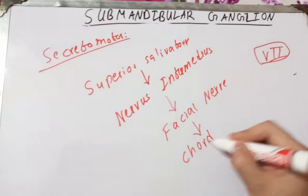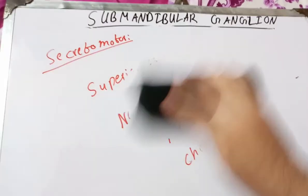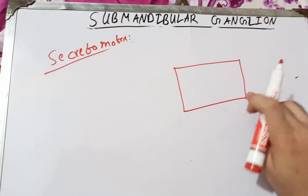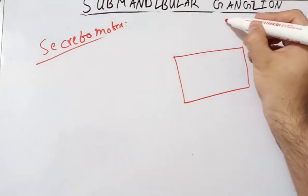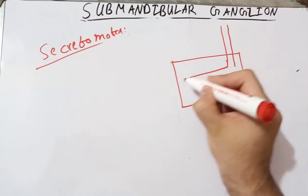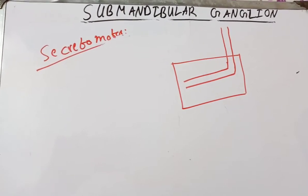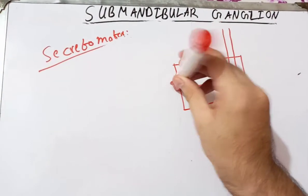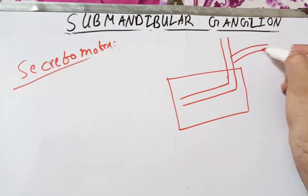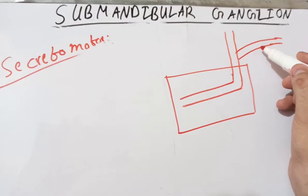There is an anatomical relationship between the chorda tympani branch and the greater petrosal nerve which needs to be clarified. Let's suppose this is the medial wall of the tympanic cavity. The facial nerve comes through the internal acoustic meatus and traverses the medial wall of the tympanic cavity. Before entering the tympanic cavity it gives a branch called the greater petrosal nerve, which supplies secretomotor fibers to the pterygopalatine ganglion and in this way supplies the lacrimal gland.